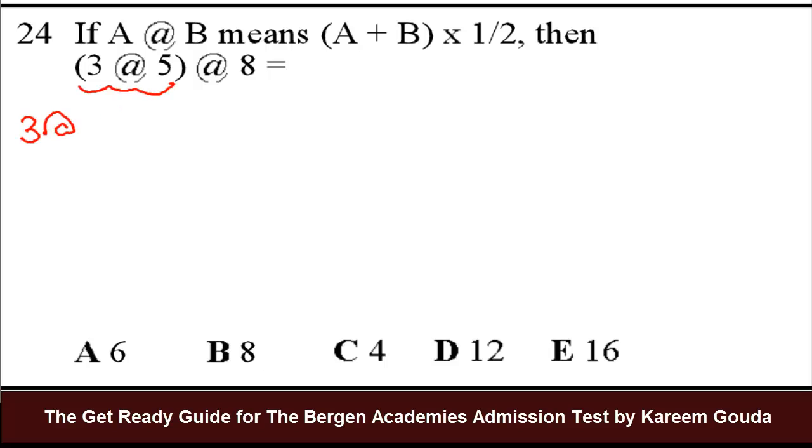It's A, the first thing, which is 3 here, plus B, the second number, which is 5 here, all times half. Order of operations. Remember what's in parentheses first. 3 plus 5 is 8. 8 times half is 4. So 3 at 5 right here is actually equal to 4.